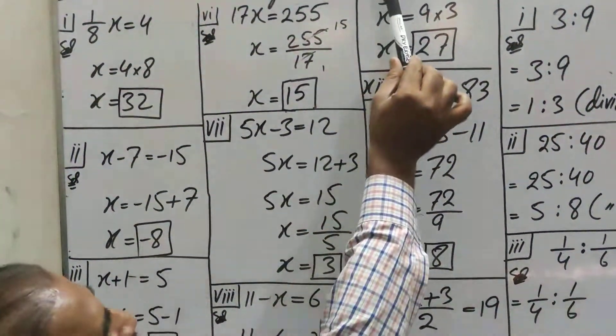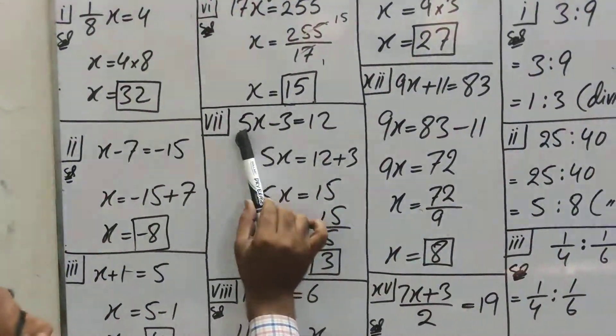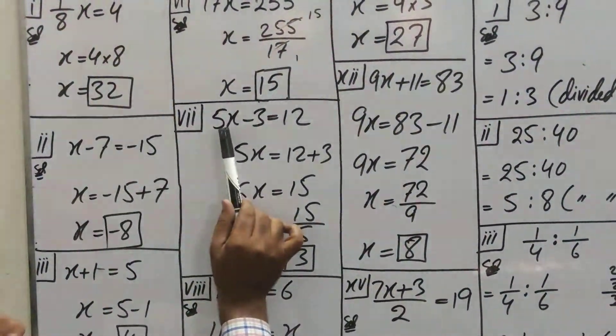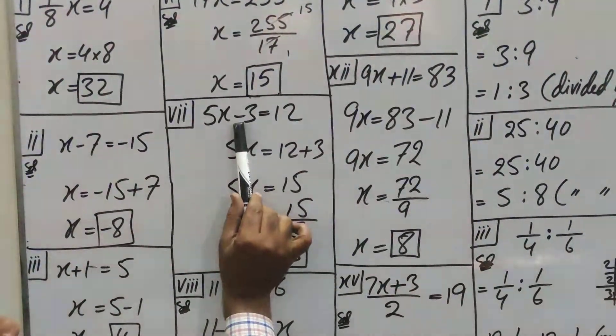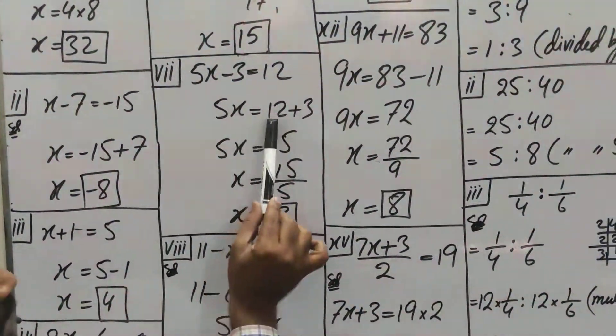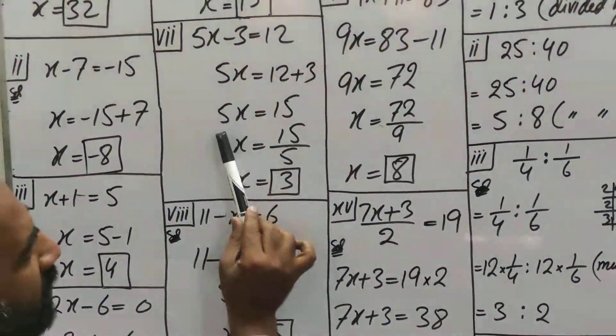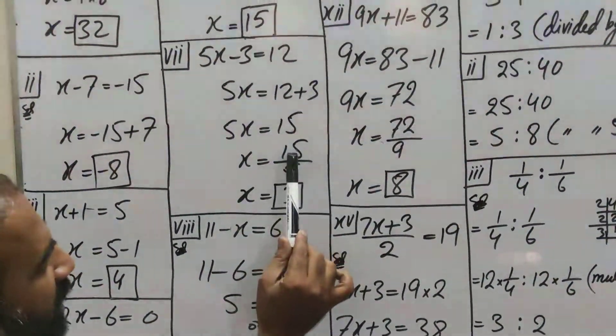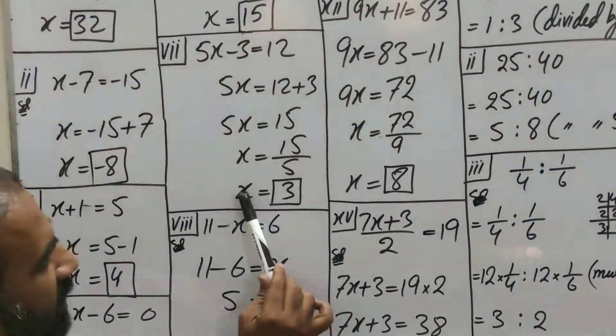This question, 7th part. 5x - 3 = 12. Minus 3 here will be plus 3, and add it. 15. 5 multiply it, here divide. 15 ÷ 5 = 3. So 3 will be, this answer will be.